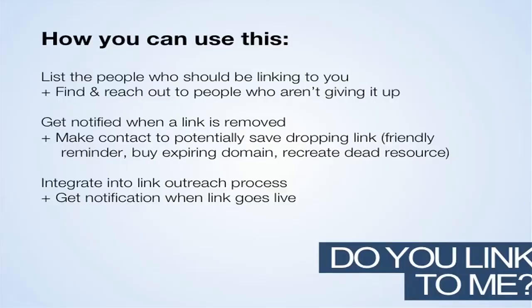The second problem — canonicalization — we're going to need to combine attribute selectors, but I've got a different one that's going to show us how to do that. So how can you use this in your job? If you have a list of people who should be linking to you, you could easily scrape their sites to find out if they're not, and if they're not, reach out to them and try to get a link.